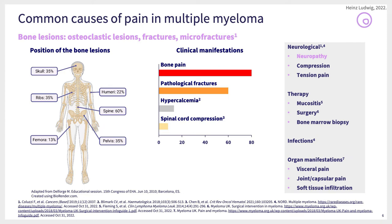This slide shows the main sites for bone lesions in myeloma. The main site is the spine — 60% of patients have bone lesions in the spine — followed by pelvis at 35%. Skull lesions usually do not cause pain. Rib fractures are also quite frequent, occurring in about 35% of patients.